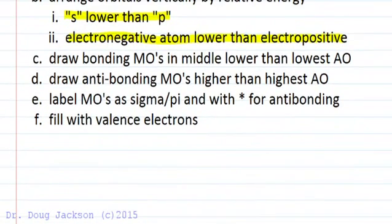We want to draw the MOs in the middle, lower in energy for the bonding MO, lower than the lowest atomic orbital. Then draw the antibonding MO higher than the highest atomic orbital. Label those as sigma or pi bonding with a star for antibonding orbitals, and then fill with the valence electrons.